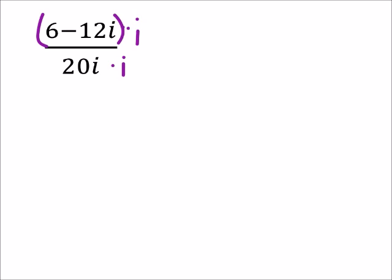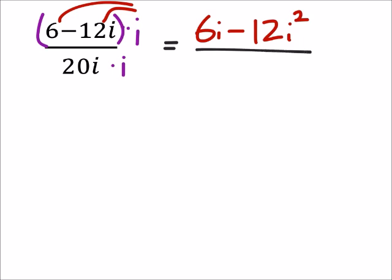So what this does is it gives us, let's distribute this i. So I have a 6i minus 12i which now is multiplied by another i making that i squared.